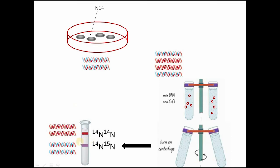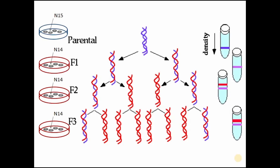The intermediate band represented hybrid DNA — containing one heavy N-15 strand and one light N-14 strand. The upper lighter band represented fully new DNA, where both strands were light N-14.